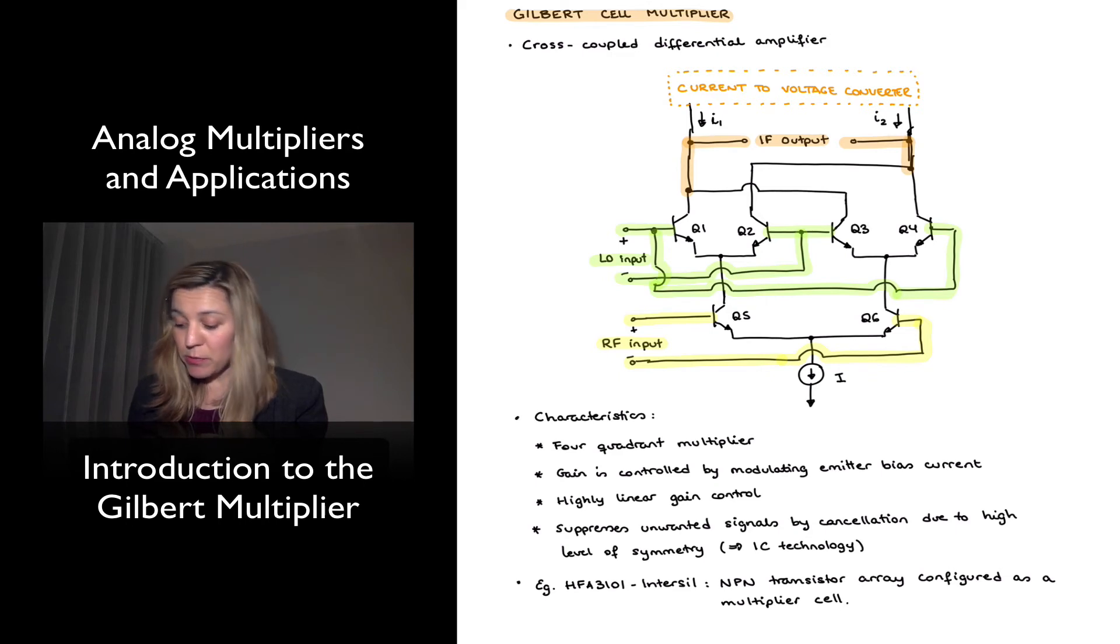And then this particular circuit suppresses the unwanted signals by cancellation due to the high symmetry of the circuit. We can see the circuit is very symmetric, and so, whereas in other cases, we will need to use other techniques to suppress the noise or the unwanted portions of signals. In this case, they simply cancel each other out.